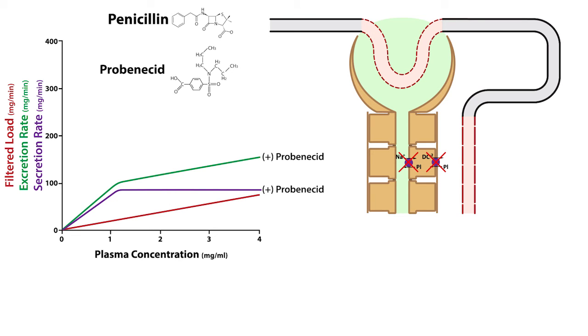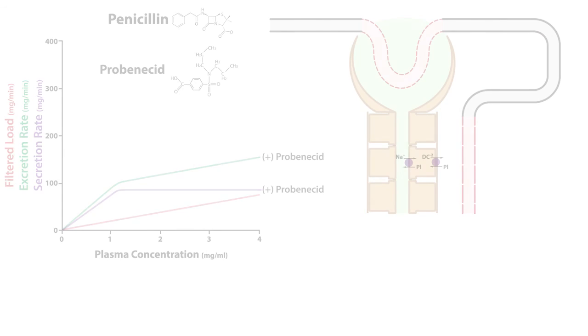The transporters involved in the secretion of penicillin, as well as many other organic acids, are located in the apical and basolateral membranes along the proximal tubule. Studies show that probinicide is also effective at increasing the plasma concentration of antiviral drugs, which suggests that secretion plays a critical role in the clearance of these drugs as well.